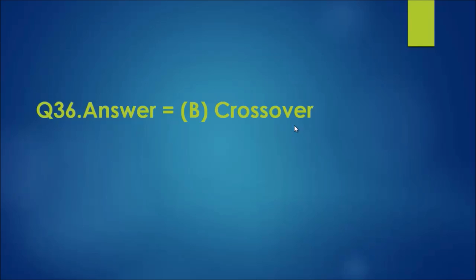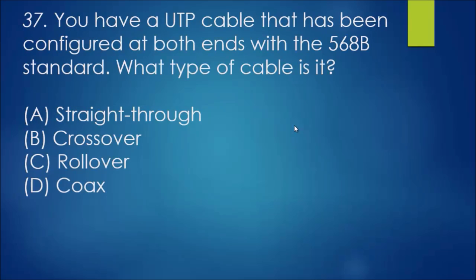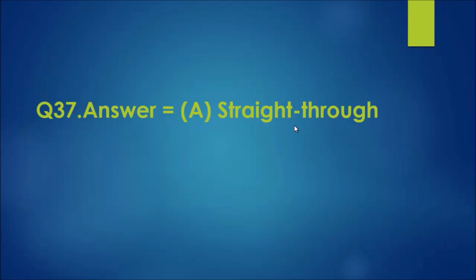Question 37: You have a UTP cable that has been configured at both ends with the 568B standard. What type of cable is it? Well, if it's the same on both ends, then it's a straight-through cable. So that's the answer, A, straight-through. They're basically connecting two non-similar devices together with the same connection.